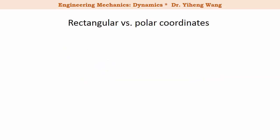You have probably already learned about the polar coordinates, but just as a quick review. Here we have a rectangular coordinate system that we are most familiar with. On this coordinate system we have a point P represented by its x, y coordinates. The x coordinate represents the distance from the y axis, and the y coordinate represents the distance from the x axis.